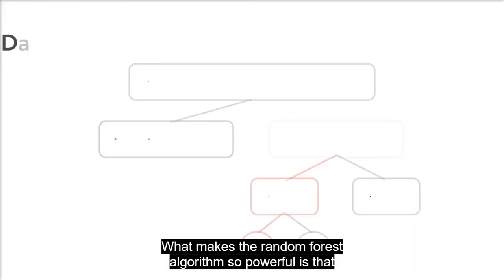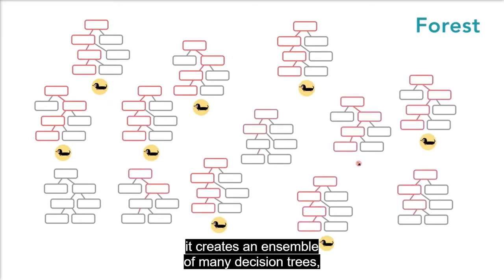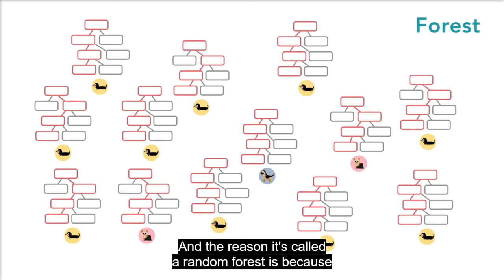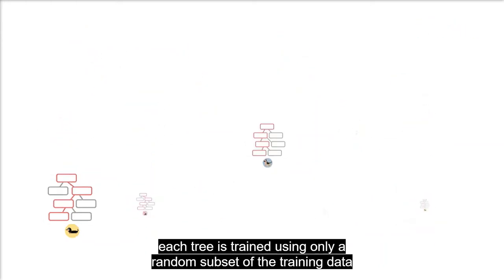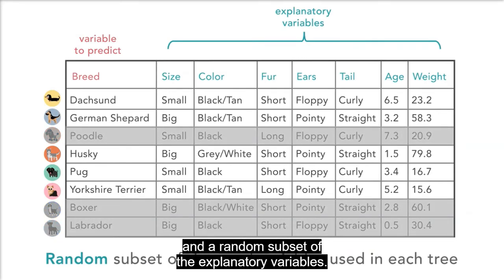What makes the random forest algorithm so powerful is that it creates an ensemble of many decision trees, hence the name forest, and the reason it's called a random forest is because each tree is trained using only a random subset of the training data and a random subset of the explanatory variables.